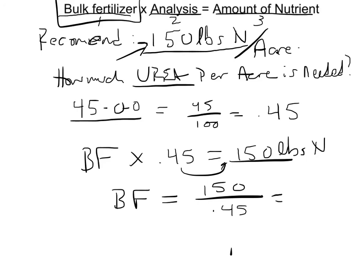I'm going to get my calculator out here. 150 divided by .45, that is 333 pounds of urea per acre. Right? For one acre to receive this 150 pounds that we need, we have to put 333 pounds of urea out there. So in order to get that much nitrogen nutrient, we need this much urea fertilizer.